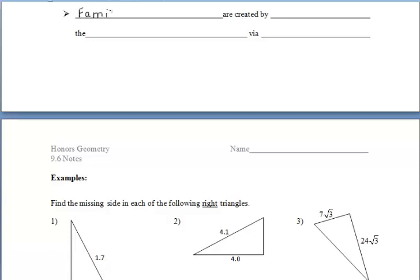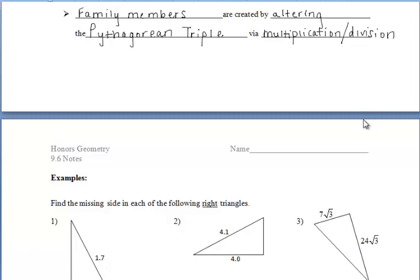Let's talk about the alteration of our Pythagorean triples. Family members are created by altering the Pythagorean triple via multiplication or division. Let's be thinking about that in the following example problems.